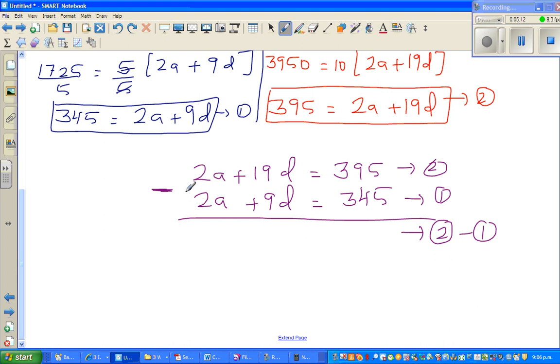2a minus 2a will get cancelled. 19d minus 9d is 10d, and 395 minus 345 is 50. So 10d equals 50, which means d is 5. The common difference is 5.